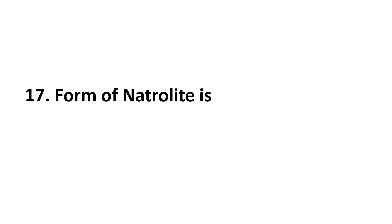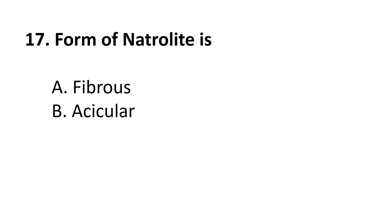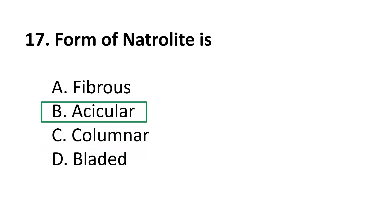Question 17: The form of natrolite is — A. fibrous, B. acicular, C. columnar, D. bladed. The correct answer is B, acicular.